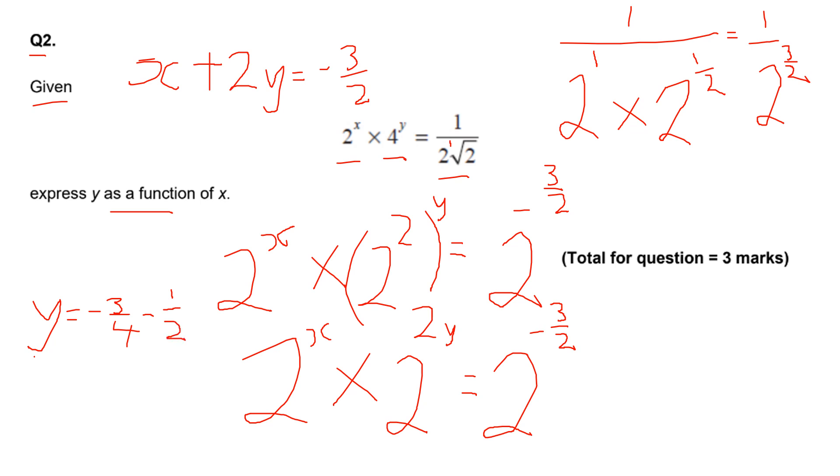We subtract X on both sides and then divide both sides by two. If you have minus three halves, that becomes minus three quarters, and then I obviously have subtracted the X.